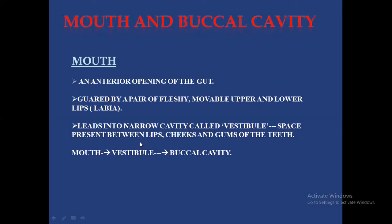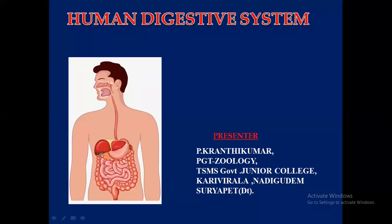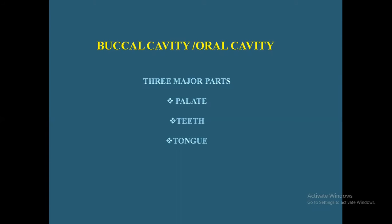In the vestibule region you can see lips, cheek, and gums of the teeth. The vestibule opens into the buccal cavity. The sequence is: mouth, vestibule, buccal cavity. The buccal cavity is also called the oral cavity — the space present inside the mouth. This oral cavity consists of three parts: palate, teeth, and tongue.